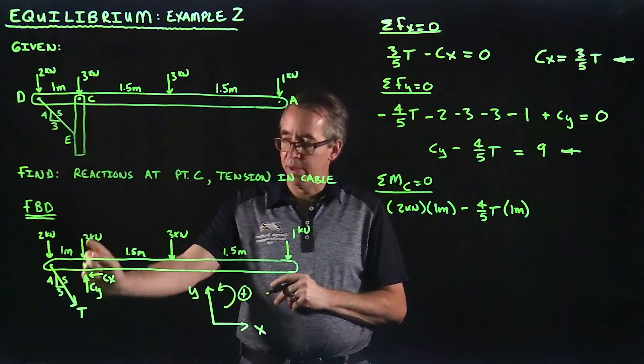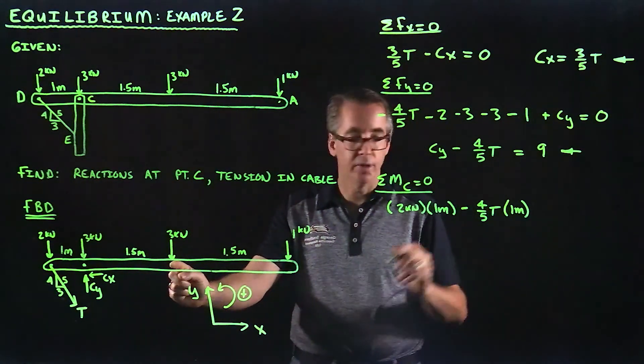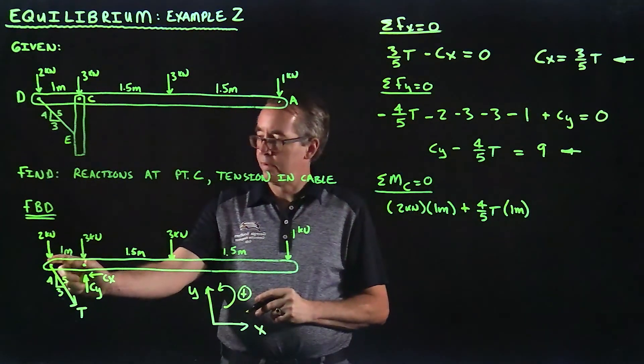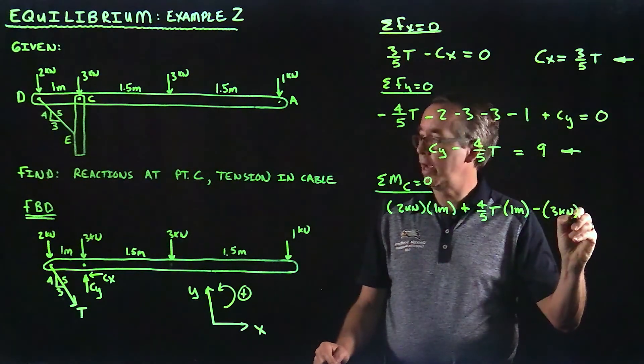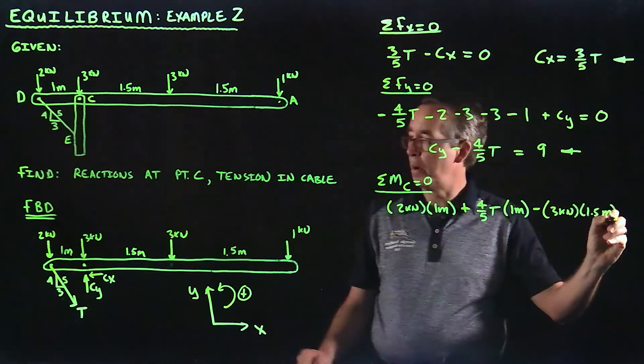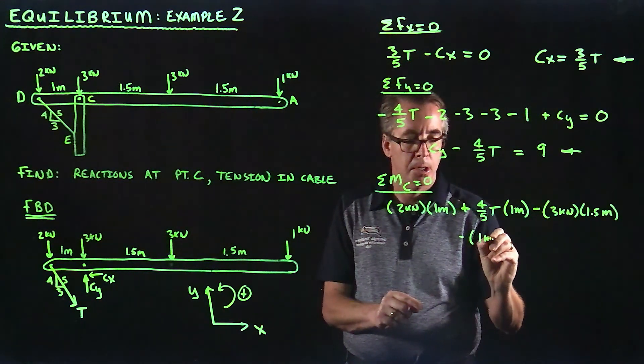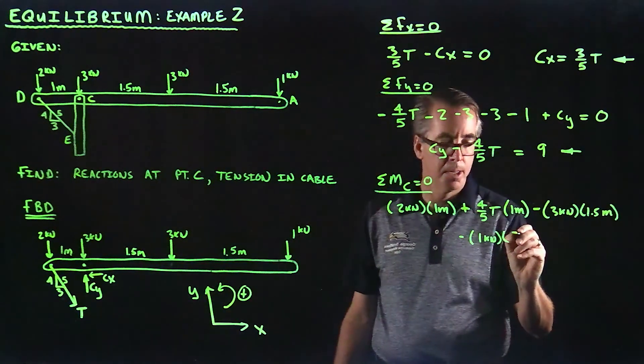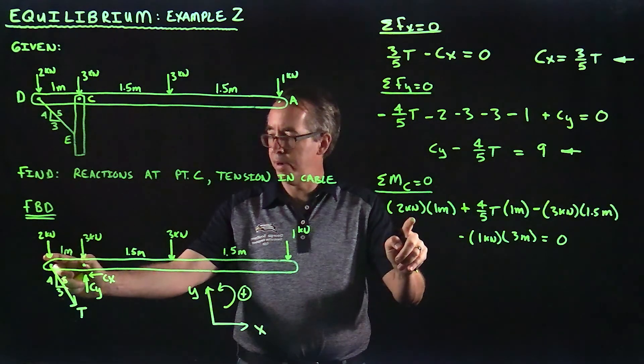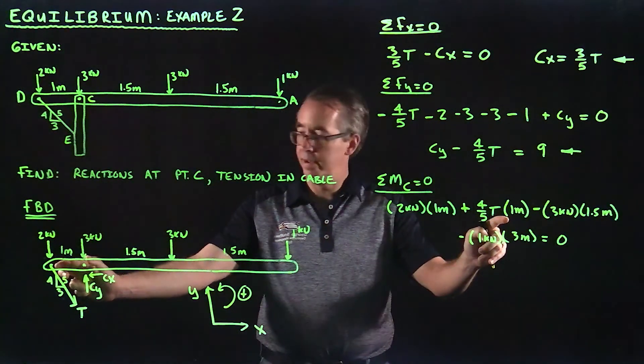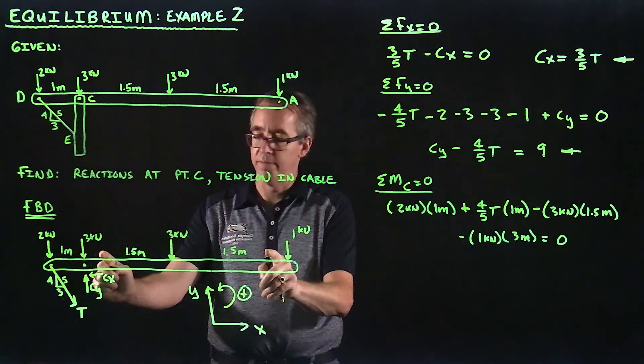If we take the moment about this point, the 3 kilonewton forces are going through that point. So our next one that we have is, here it's counter-clockwise, counter-clockwise. This one here will be a negative moment. So here we've got 3 kilonewtons at a distance of 1.5. Then we have another one of 1 kilonewton, and that distance would be 3. I've got 2 kilonewtons at 1 meter, positive. I've got 4 fifths of T at 1 meter, positive. I've got 3 kilonewtons at a distance of 1.5, negative. And I've got 1 kilonewton at a distance of 3, negative.